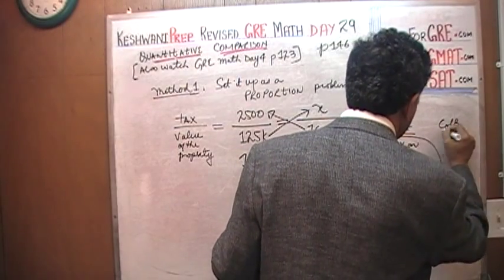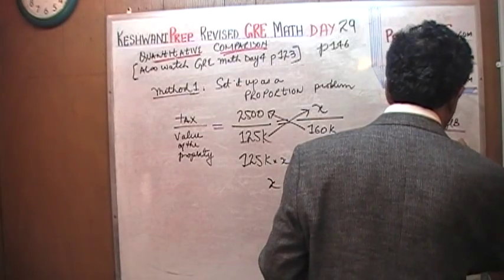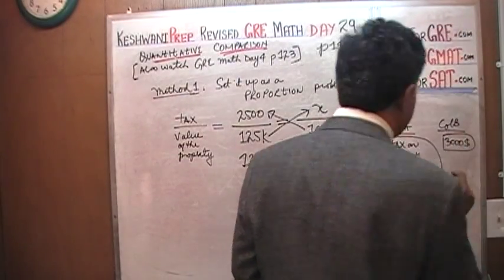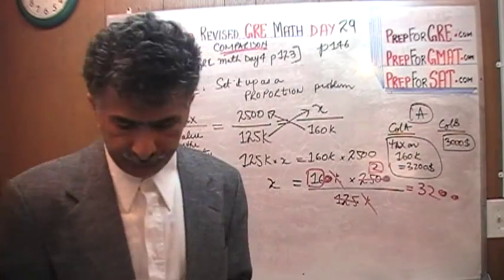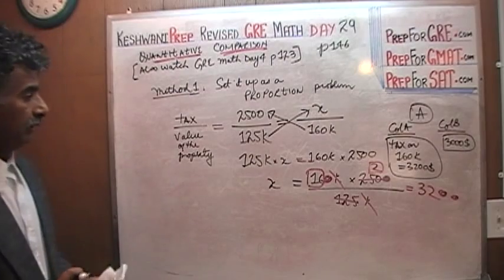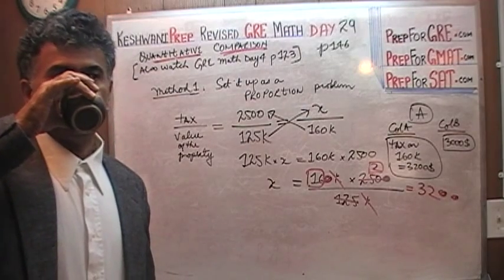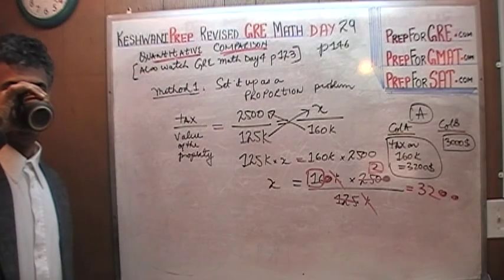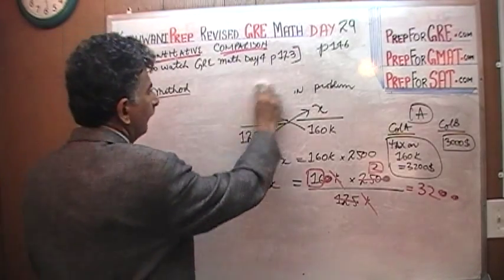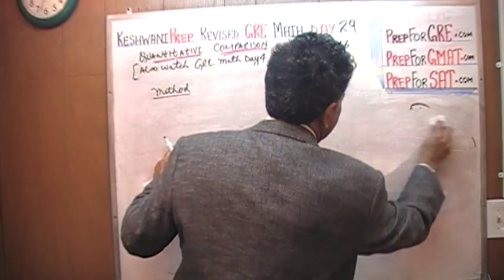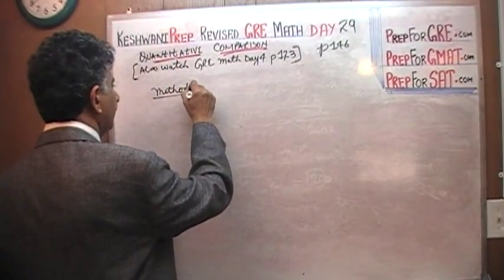That's it. So the tax on 160,000 comes out to be 3,200 dollars. And in column B we have 3,000 dollars. In column B we have 3,000 dollars. Column A we just figured out is 3,200 dollars. Therefore the answer is A. Now we are going to do a second method. That's it, we are done. Just going to pause for a minute. Catch my breath.